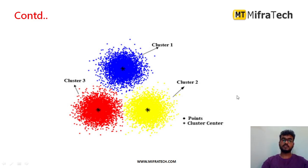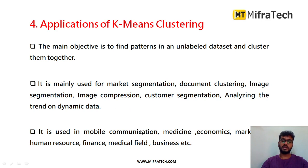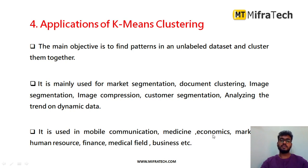The main objective of K-means clustering is to find patterns in an unlabeled dataset and group them into clusters. It is mainly used for market segmentation, document clustering, image segmentation, image compression, customer segmentation analysis, and trend analysis on dynamic data. It is also used in mobile communication, medicine, economics, marketing, human resources, finance, and the medical field. In business, customers are grouped or clustered based on their parameters, and K-means clustering is used for that purpose.